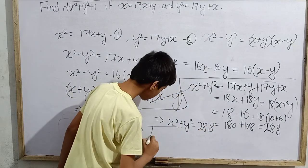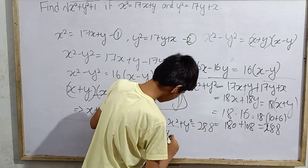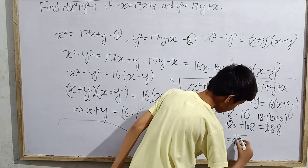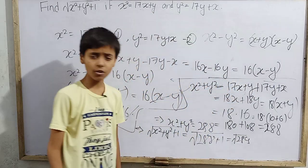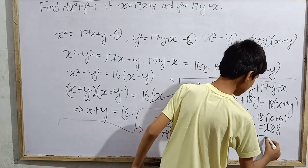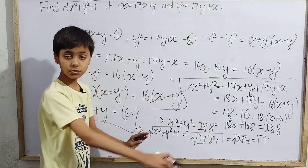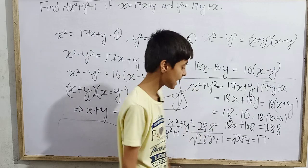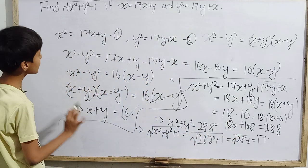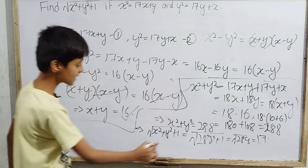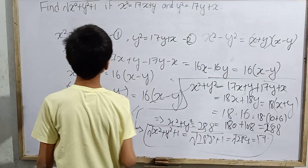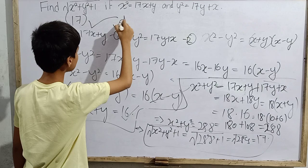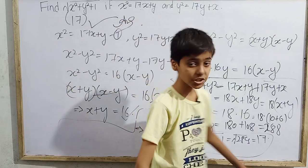Therefore, the square root of x² + y² + 1 = √(288 + 1) = √289. Since 17² = 289, the square root of 289 is 17. So the final answer is √(x² + y² + 1) = 17.